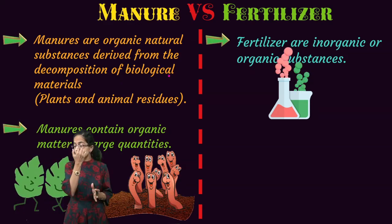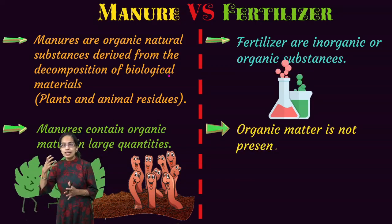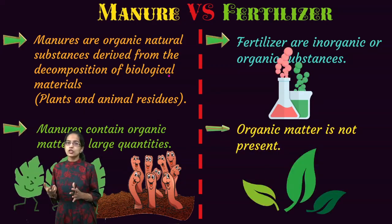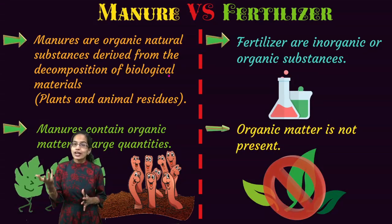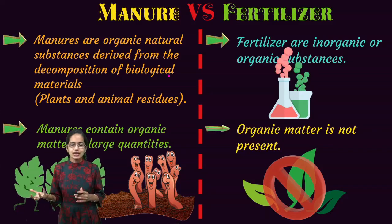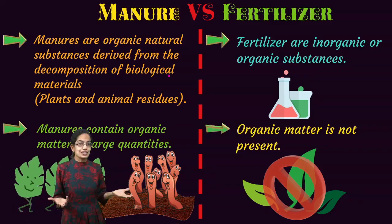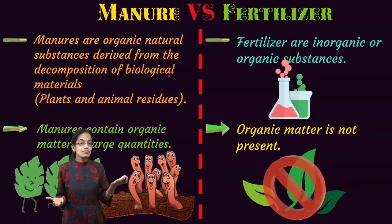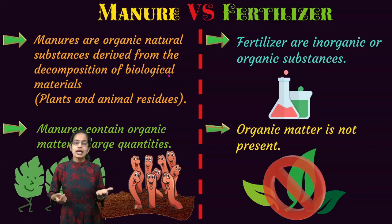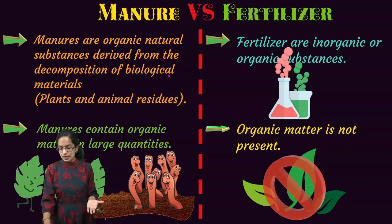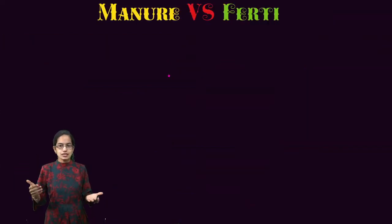As we said, manures are obtained from biological residue of plants and animals, so the organic component is much higher. However, in fertilizers, organic matter is not present, so they are mainly synthetic in nature.